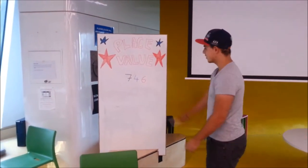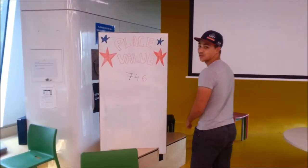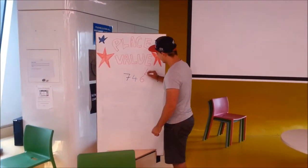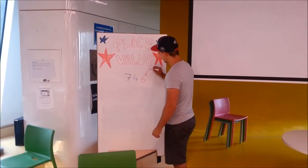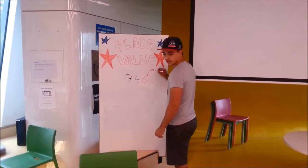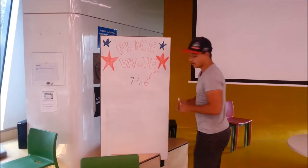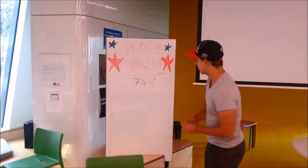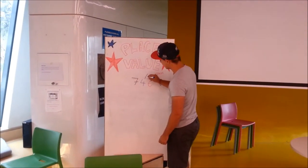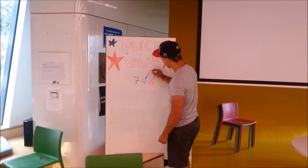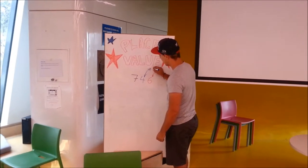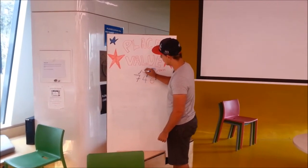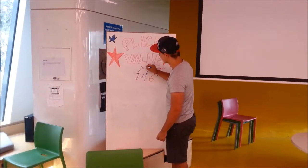For example, we've got this number here: 746. The number 6 actually represents the units. The 40 represents the amount of tens, so 4 tens. And the 7 is in reference to the hundreds.